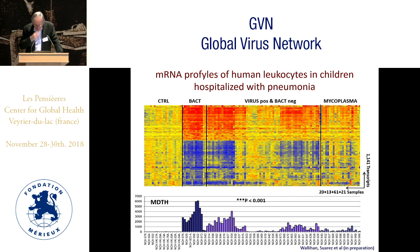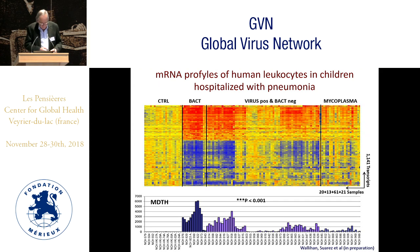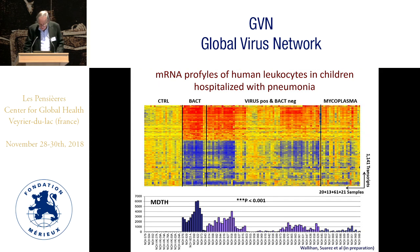We are extending the study by doing transcriptomics — looking at RNA profiles of human leukocytes. The idea is to better differentiate between carriership and organisms really associated with pathology. Using these technologies, we hope to distinguish RNA profiles seen in controls from those seen in bacterial pneumonia, and better attribute a particular pathogen to a particular clinical presentation.